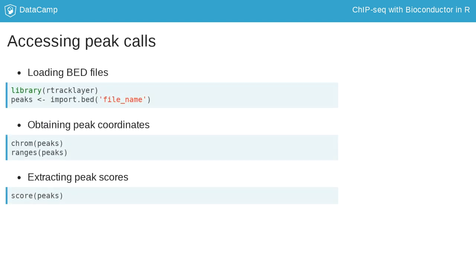The main units of interest in the analysis of a ChIP-seq experiment are peak calls that highlight regions of the genome with a high concentration of reads. These peak calls are typically stored in BED files — we look at what these files look like in more detail later. Each peak is associated with a score, which quantifies the strength of that particular peak. The peak calls can be loaded with the import.bed function. Coordinates of peaks can then be obtained by calling the seqnames and ranges functions, and the score function provides access to the peak scores.